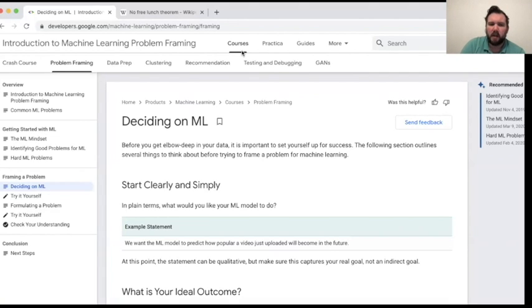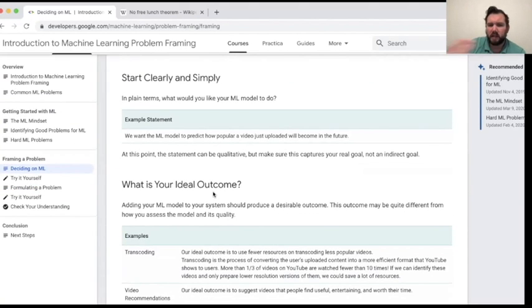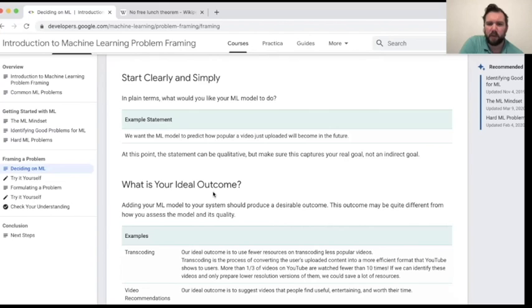From a practical perspective, from a business perspective, think about the outcome. So what exactly are you trying to do? And this is related to something Stephen Covey says in Habits of Highly Effective People: begin with the end in mind. And it's okay if the first statement that you make is a qualitative statement, but it needs to be what you really want.